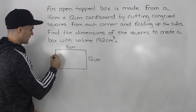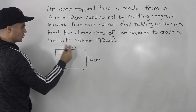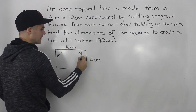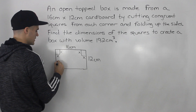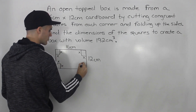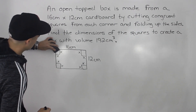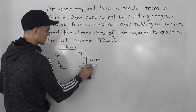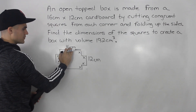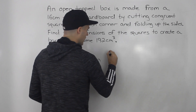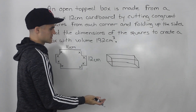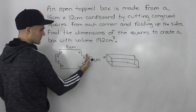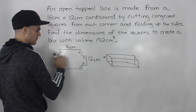So this is the cardboard right here and we're going to be cutting out squares from each corner. Congruent squares meaning the same squares, so all the squares are going to have a length x. After we cut out those squares from the corner and fold up each of these sides to create a box, the height of the box is basically going to be x, because it's going to be the same length as those sides that we fold up.